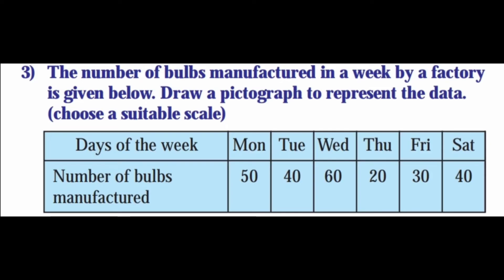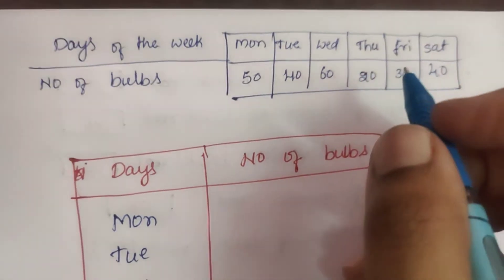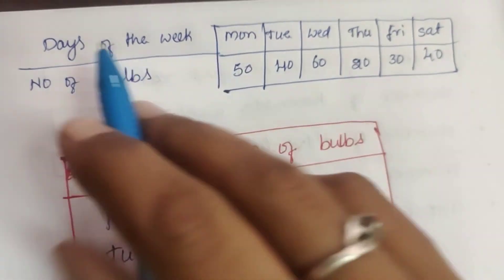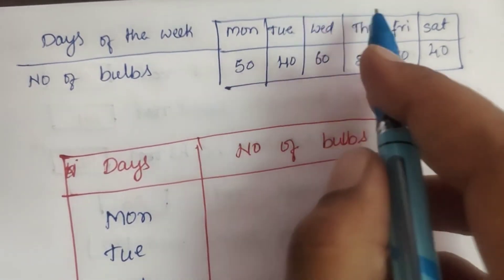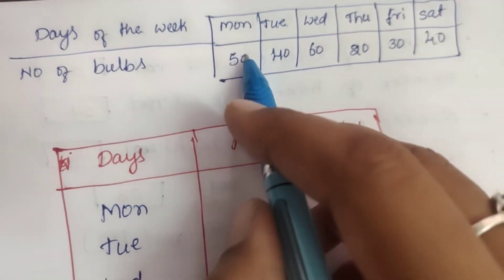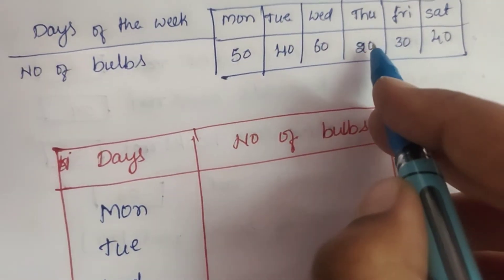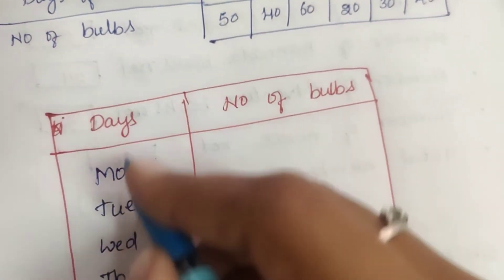Last question: The number of bulbs manufactured in a week by a factory is given below. Draw a pictograph to represent the data. Choose a suitable scale. The data is: Monday 50, Tuesday 40, Wednesday 60, Thursday 20, Friday 30, Saturday 40. This is the tabular column.